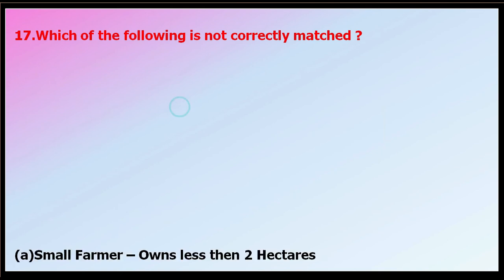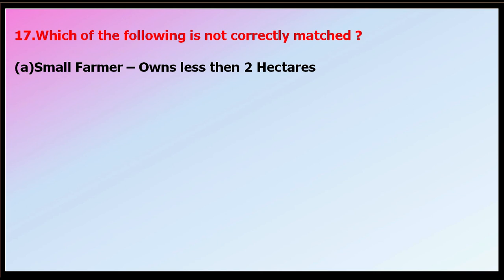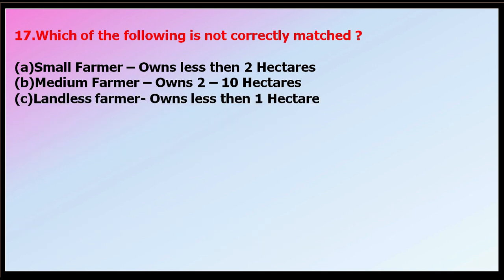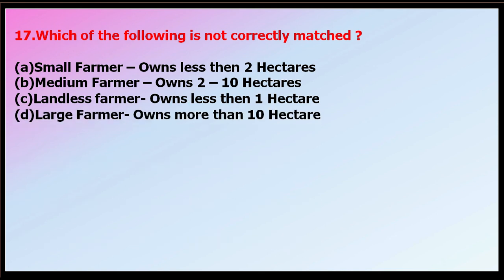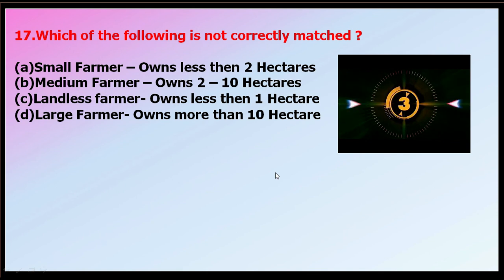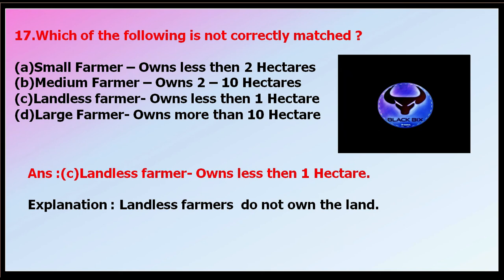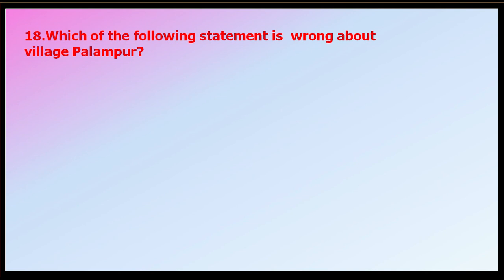Question number seventeen: which of the following is not correctly matched? Options: small farmer owns less than 2 hectares; medium farmer owns 2 to 10 hectares; landless farmers own less than 1 hectare; large farmer owns more than 10 hectares. The correct answer is landless farmers own less than 1 hectare — this is a wrong match. Landless farmers do not own land at all; they work on other farmers' land. The other matches are correct.